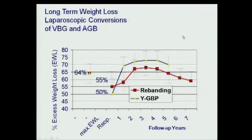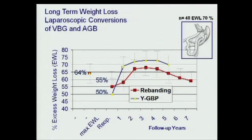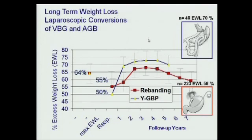The information I would like to give you is how the patients are doing now. The maximum weight loss for patients with gastric banding and VBG was 64% of excessive weight loss. Looking at the two groups — those who received a bypass versus a band — patients who had redo surgery with a bypass benefit much more from weight loss. For re-banding patients, the excessive weight loss collected from 223 VBG and re-banding patients is 58%, which is not bad compared to other procedures.